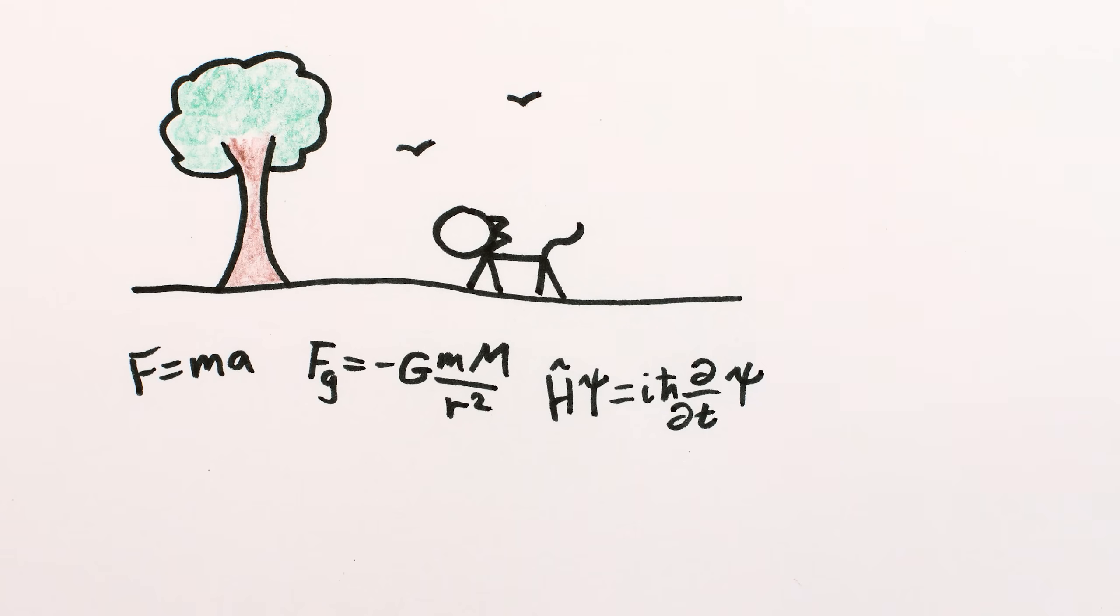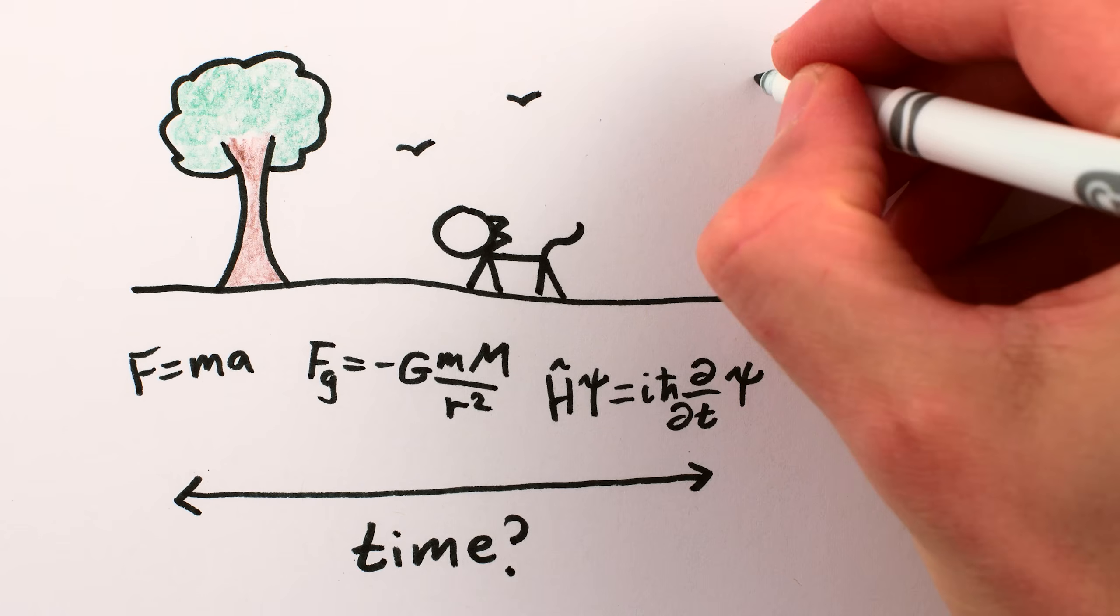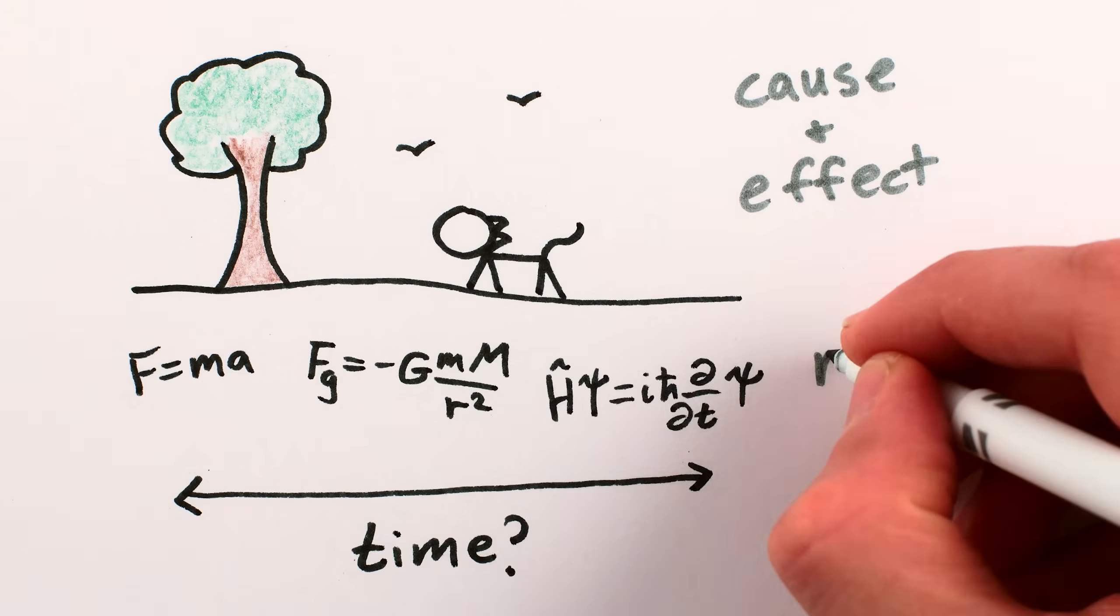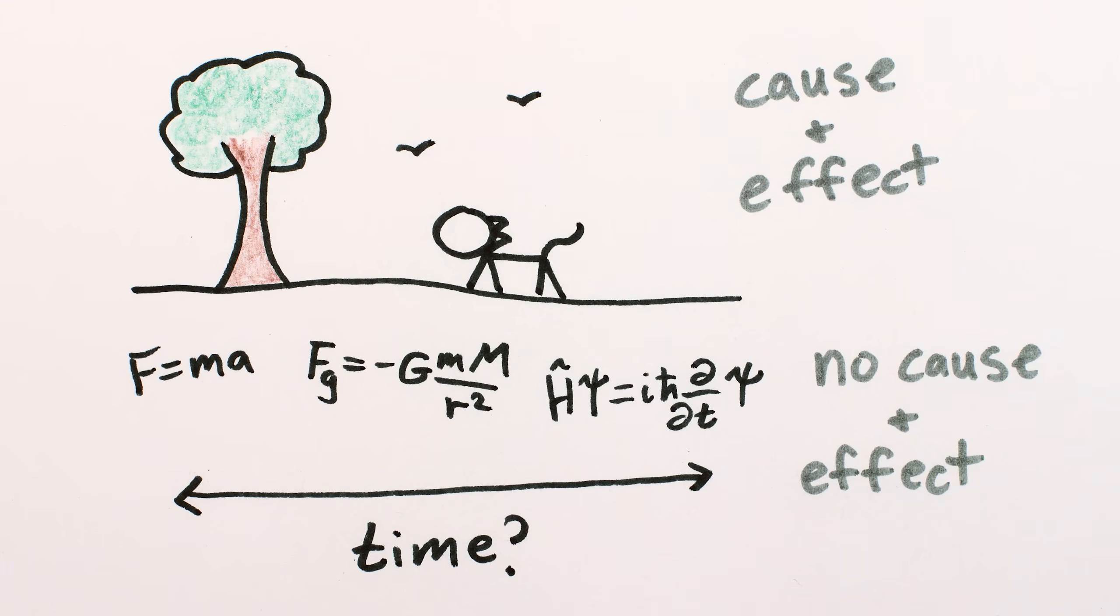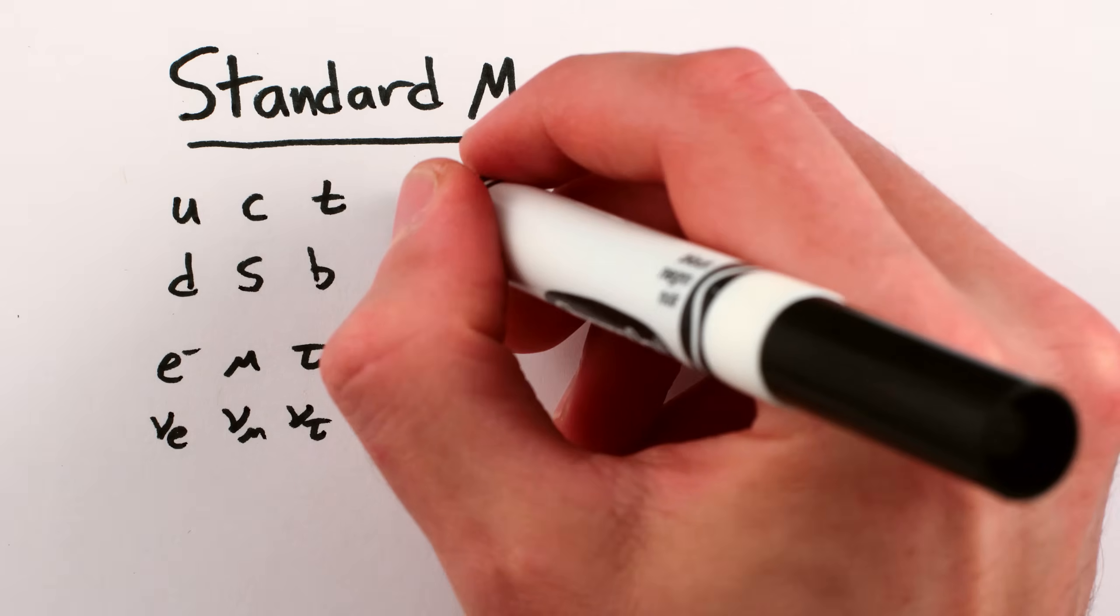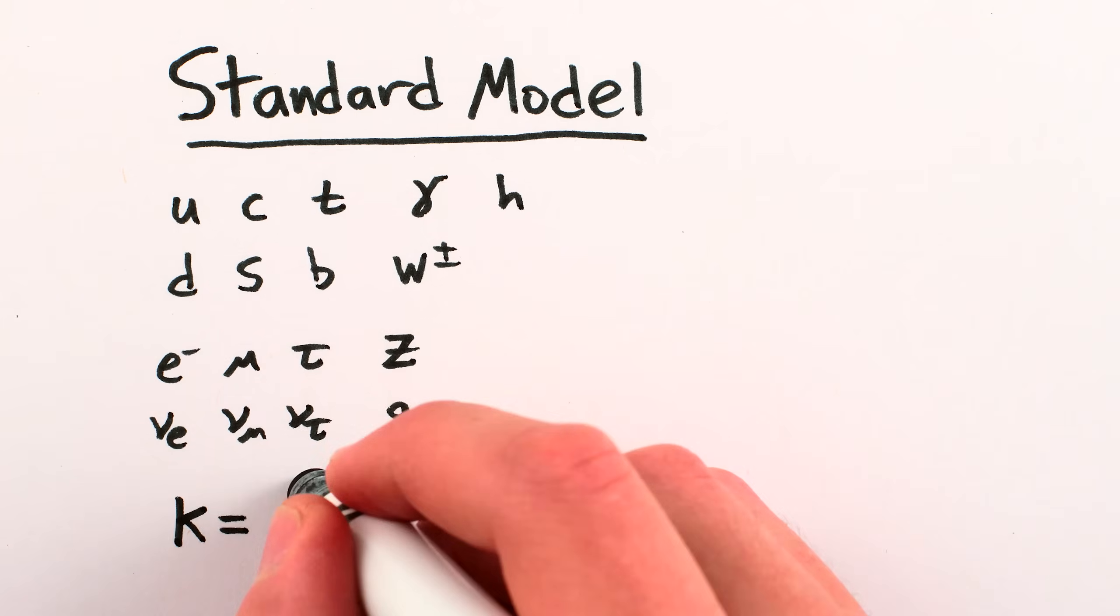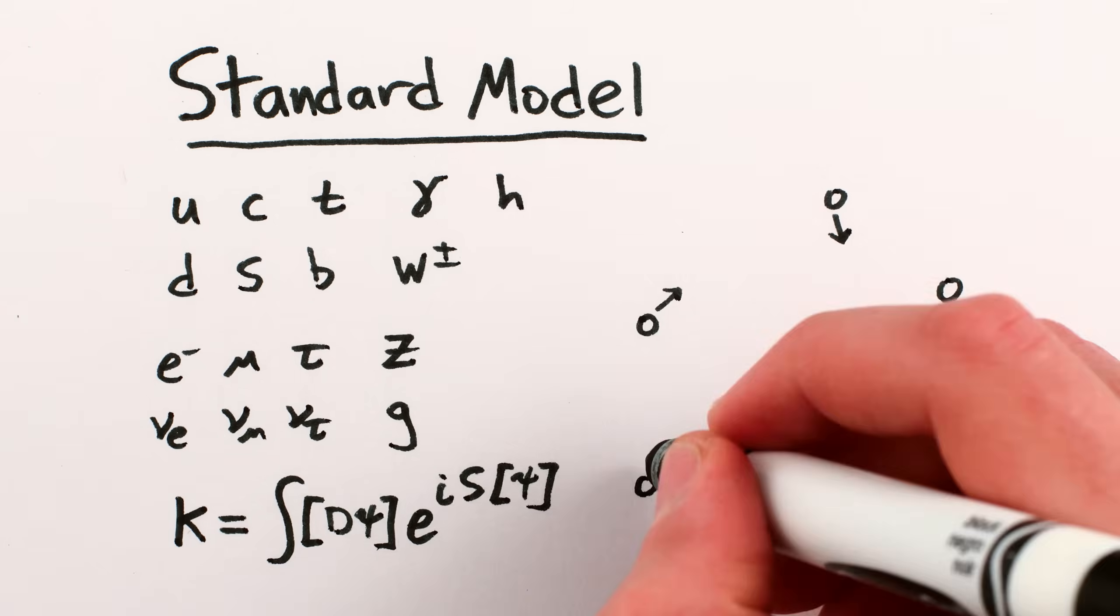But because the underlying laws of physics don't care about the direction of time, cause and effect don't have the same meaning at a fundamental level. It's not that anything goes. The basic constituents of the universe, the particles and forces of modern physics, behave in predictable ways according to the laws of nature.